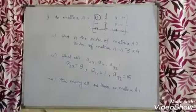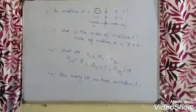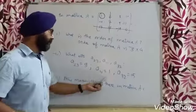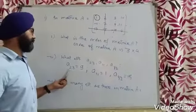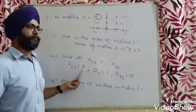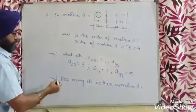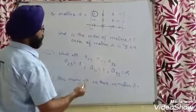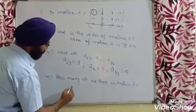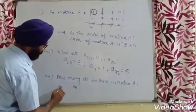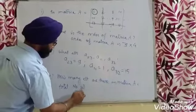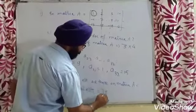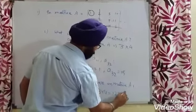The suffixes in A23, A11, A32 represent rows and columns and give the position of each element in the matrix. For the third question — how many elements are in matrix A — we multiply the number of rows and columns: 3 rows × 4 columns = 12 elements total.